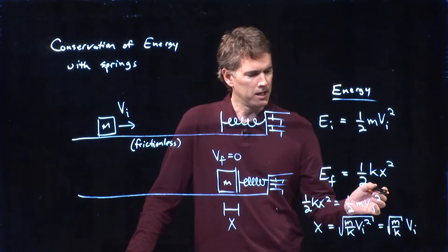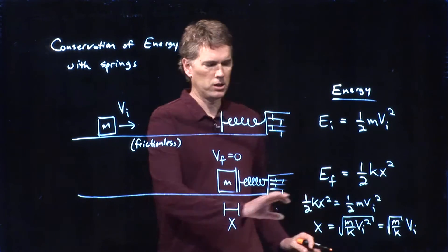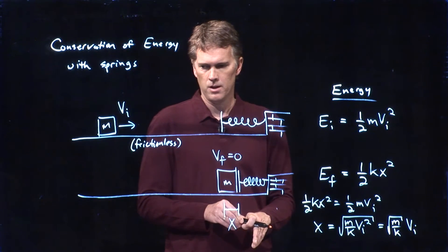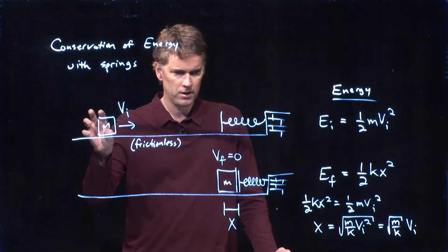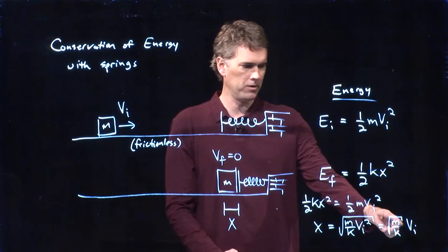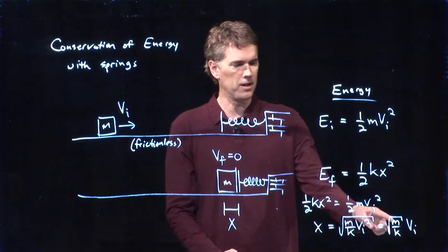And so we can write the whole thing like that. How far does the spring compress? It is square root of m over k times v i. And now when you look at this solution, you should make sure that it makes sense to you. If that mass is heavier, that spring is going to get compressed more. m is there in the numerator, so that will increase x as m increases.